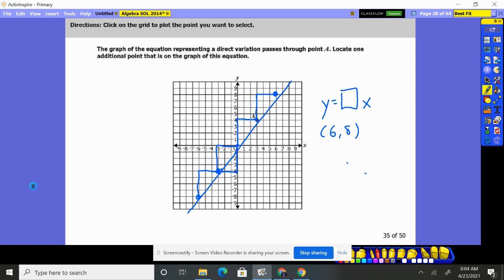The key here is to remember: if it's direct variation, this is going to be going through the origin, which will always be a point (0,0) when it's a direct variation.